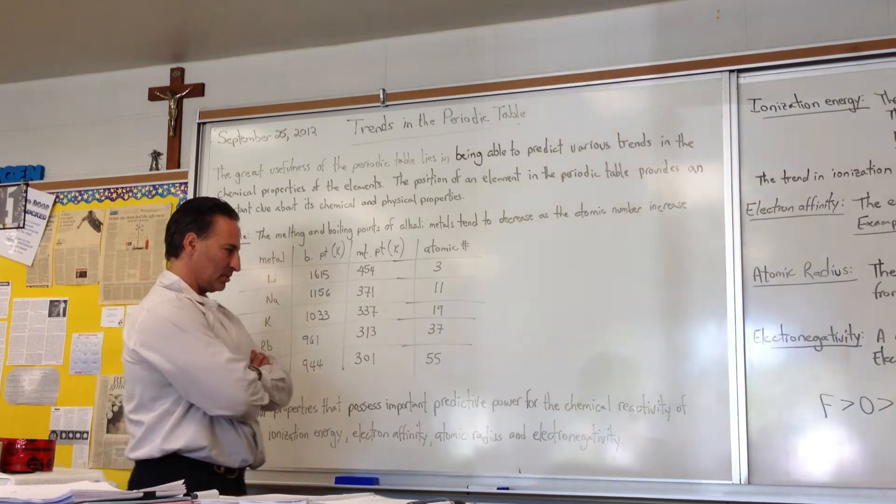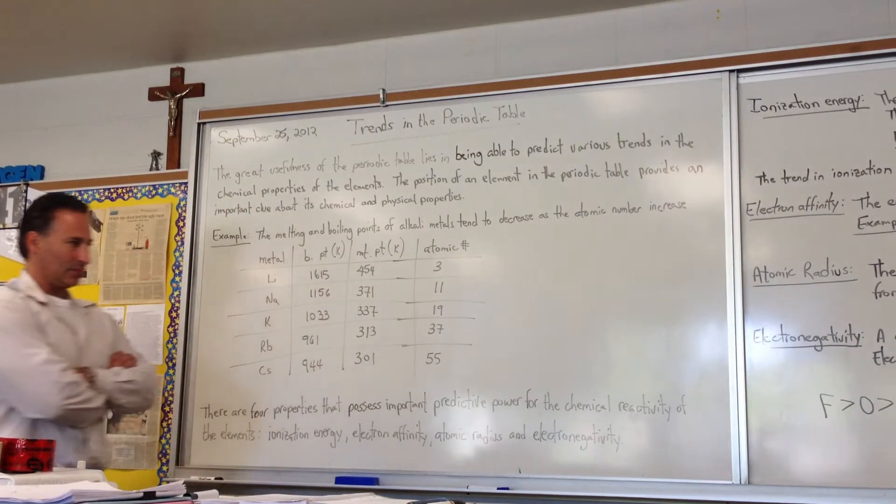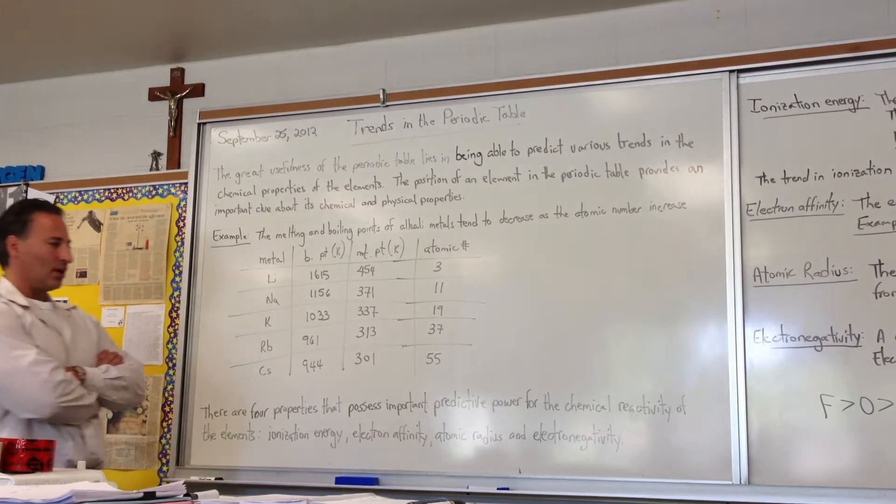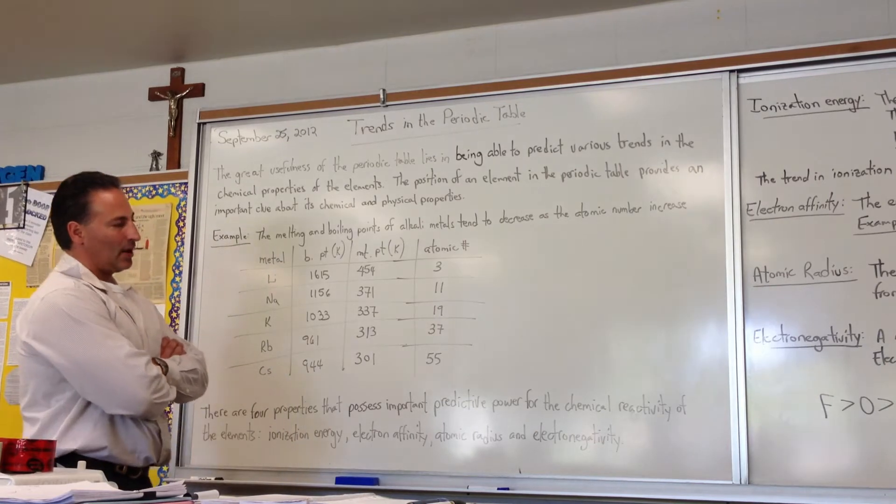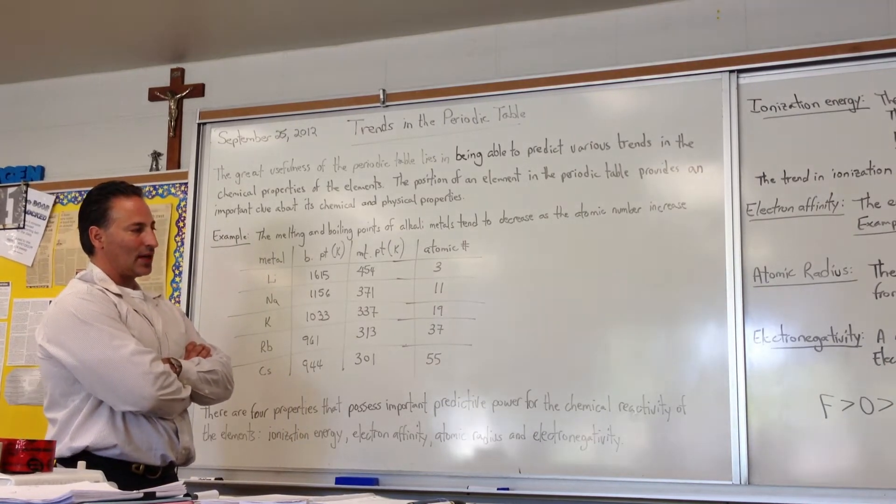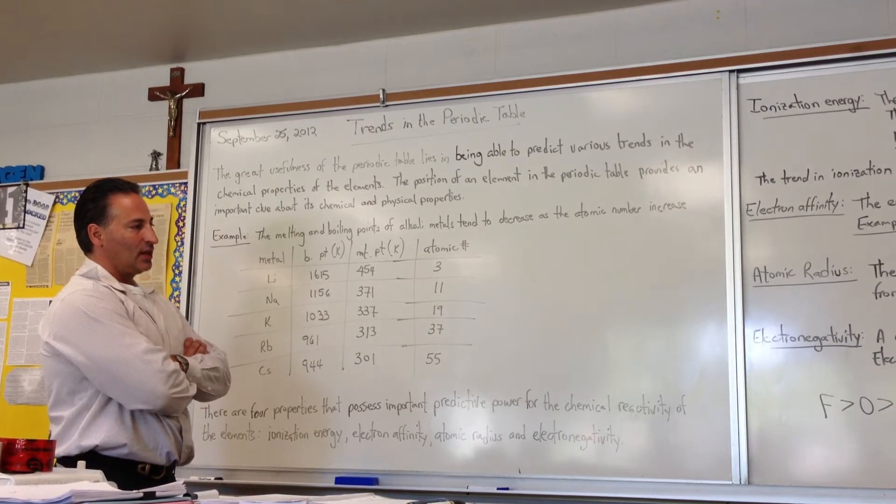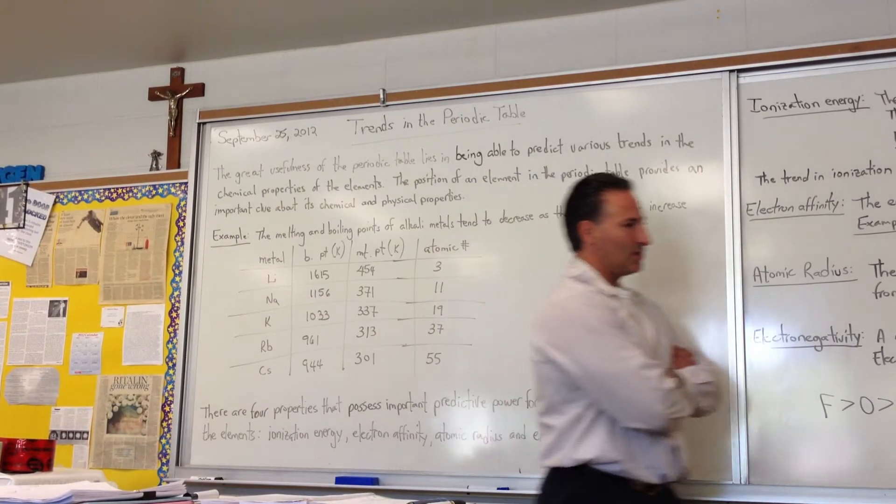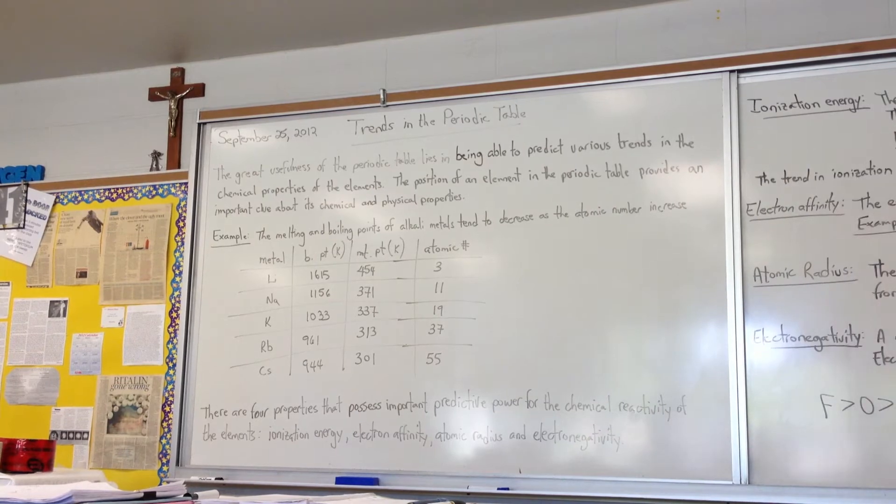For example, with the most electronegative element, which is fluorine, it's possible to predict that it'll have electron withdrawing power. So it'll tend to pull the electrons towards itself in a molecule. And if we look at the second board, we'll see the different definitions of what those things mean.